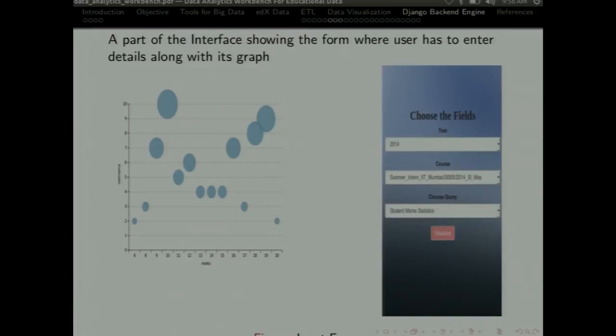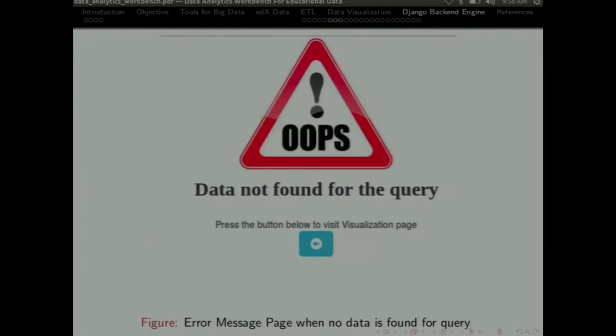This is just a screenshot that we have generated a graph depending on student mark statistics. This is the right-hand side. You can see the input form where user can choose for which course you want to enter and when the course has started. And what are the queries. Like in the last drop-down, you can choose for which query you want to check for. This is the message that gets shown when there is no data for the particular query.